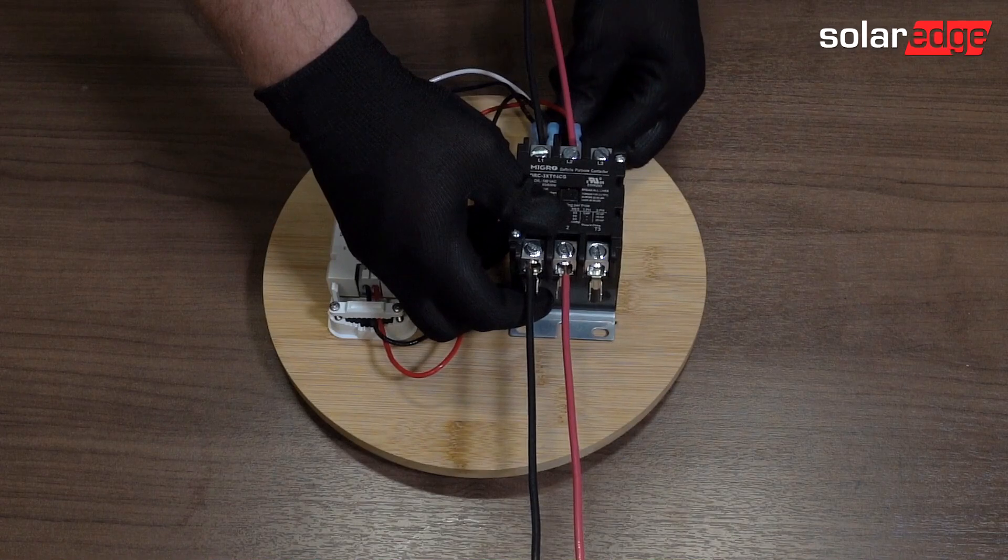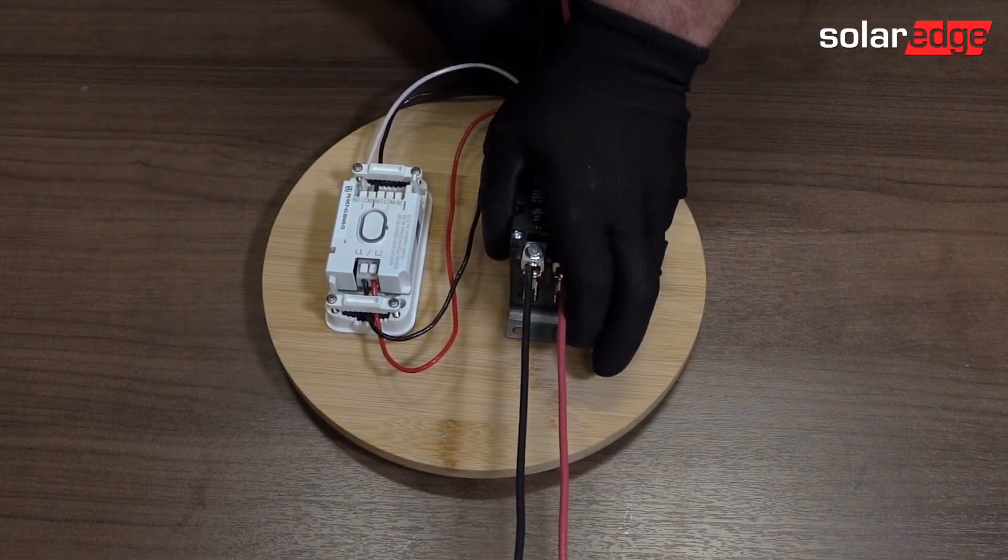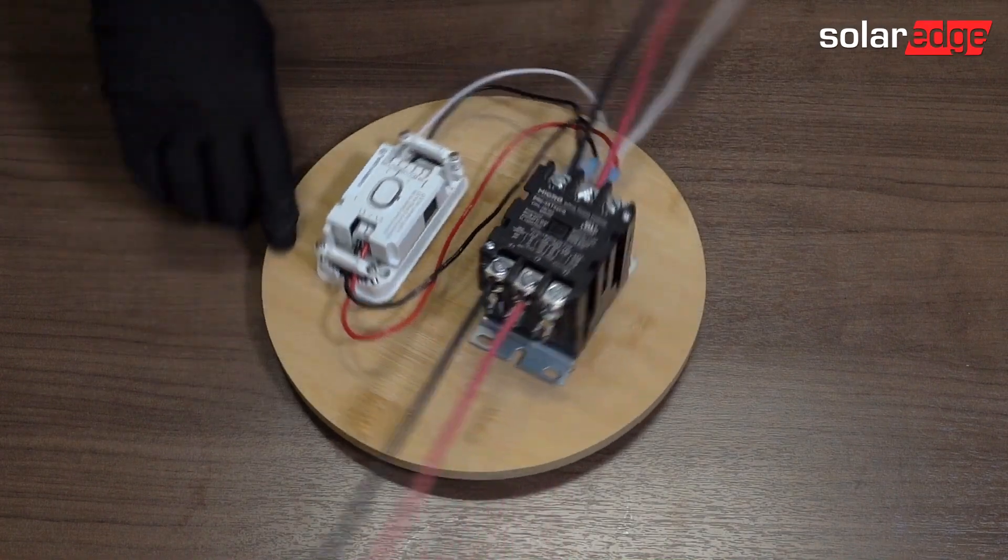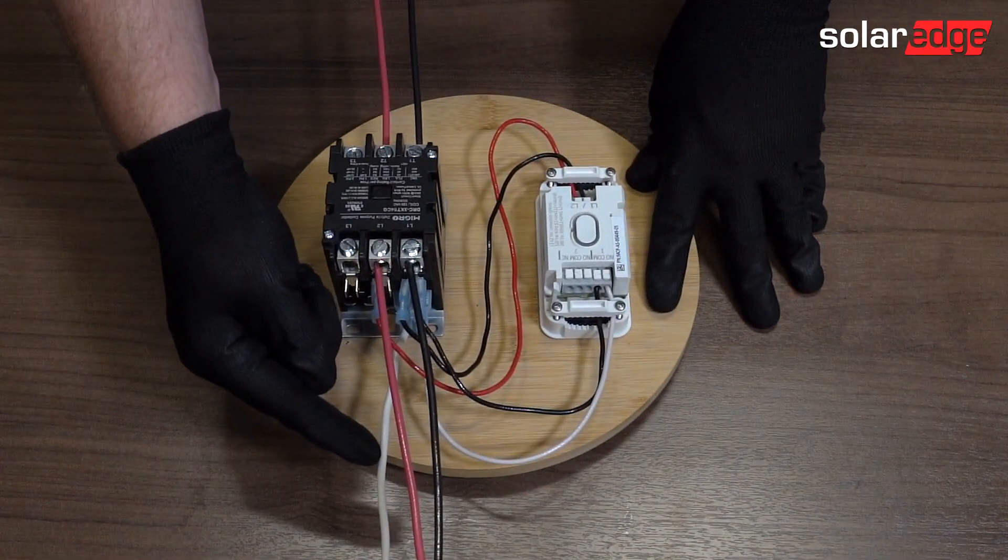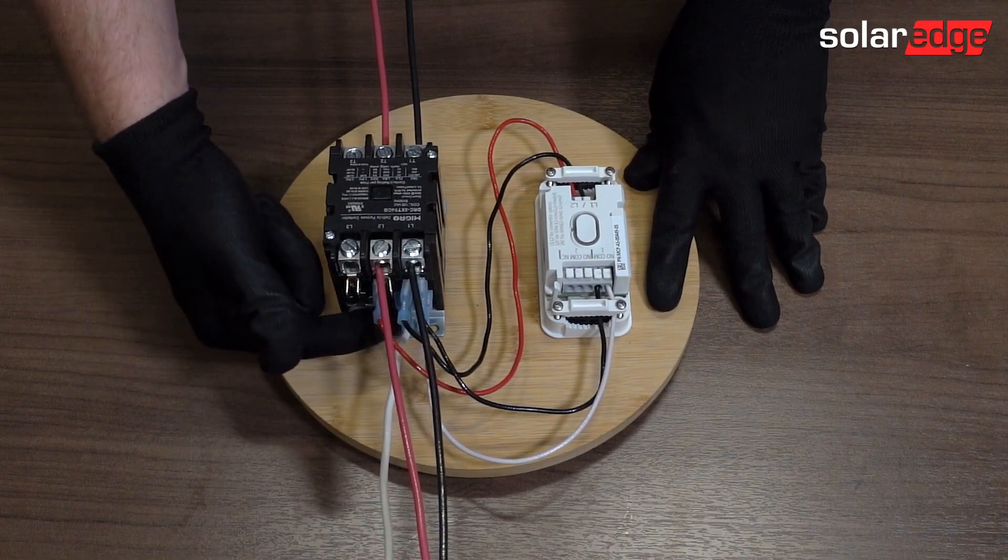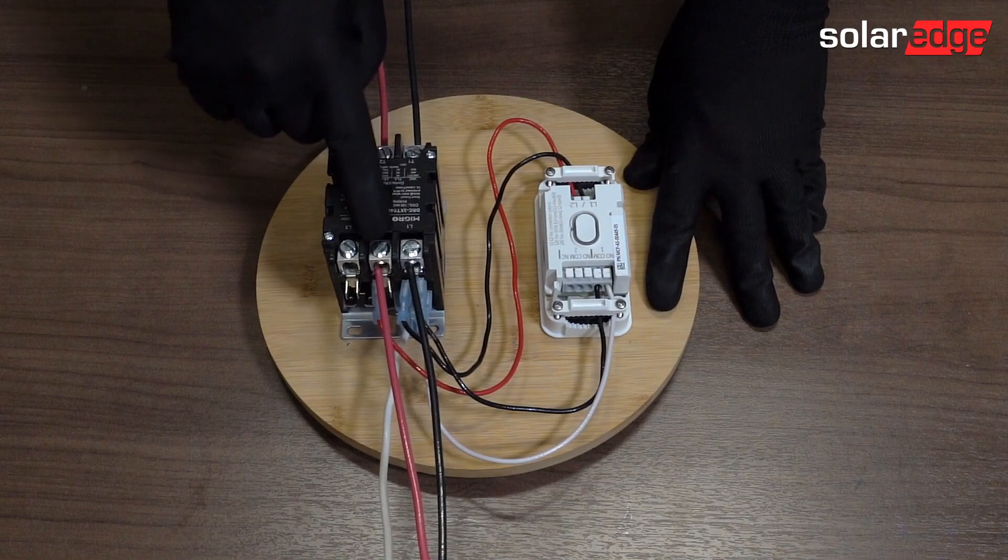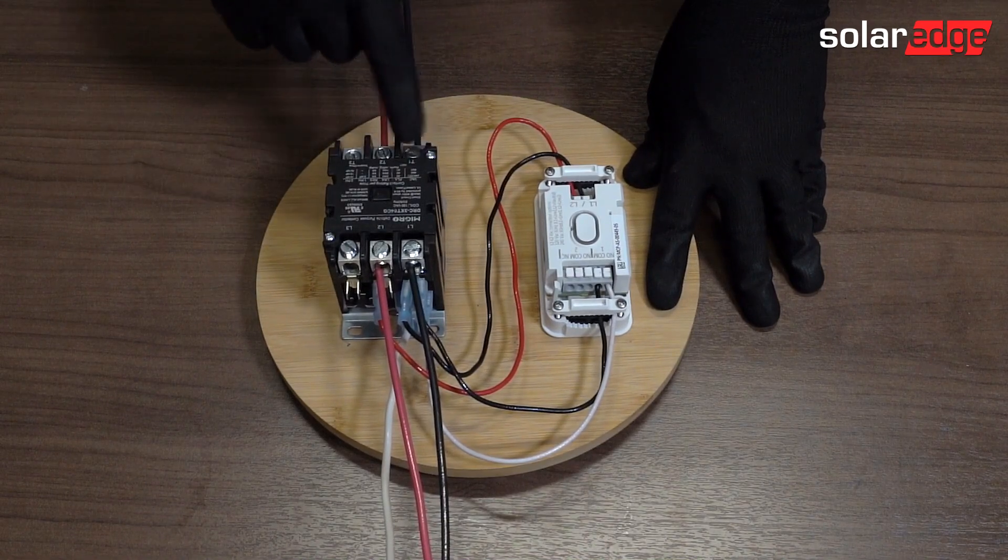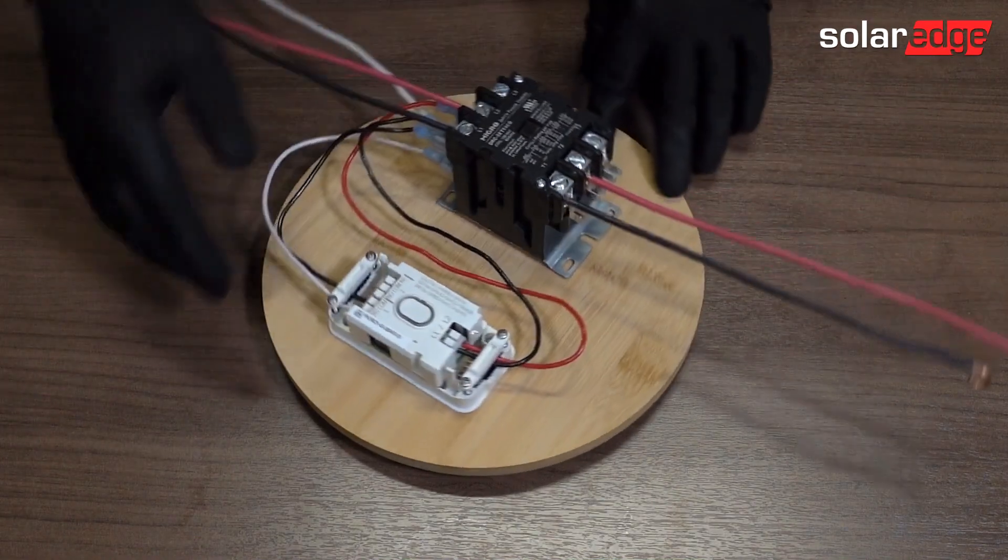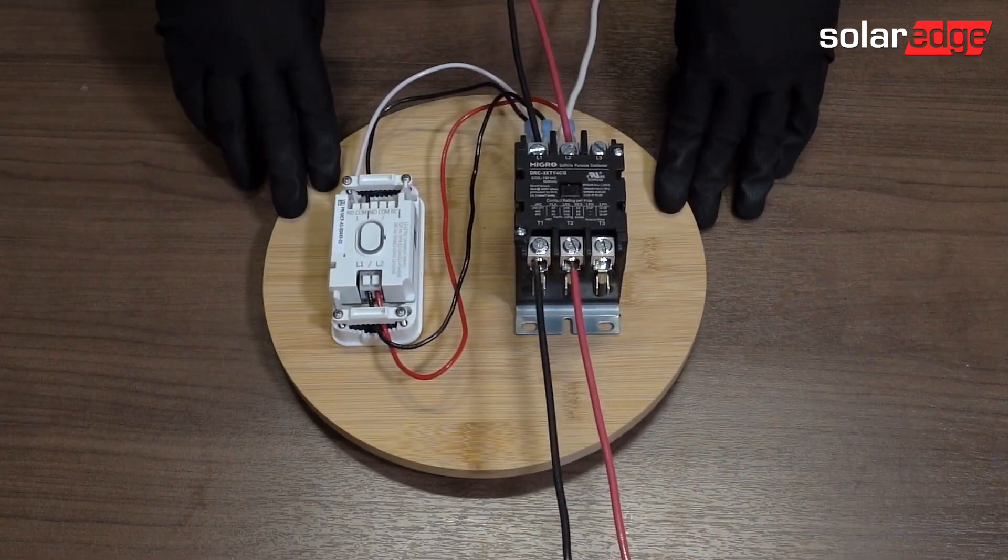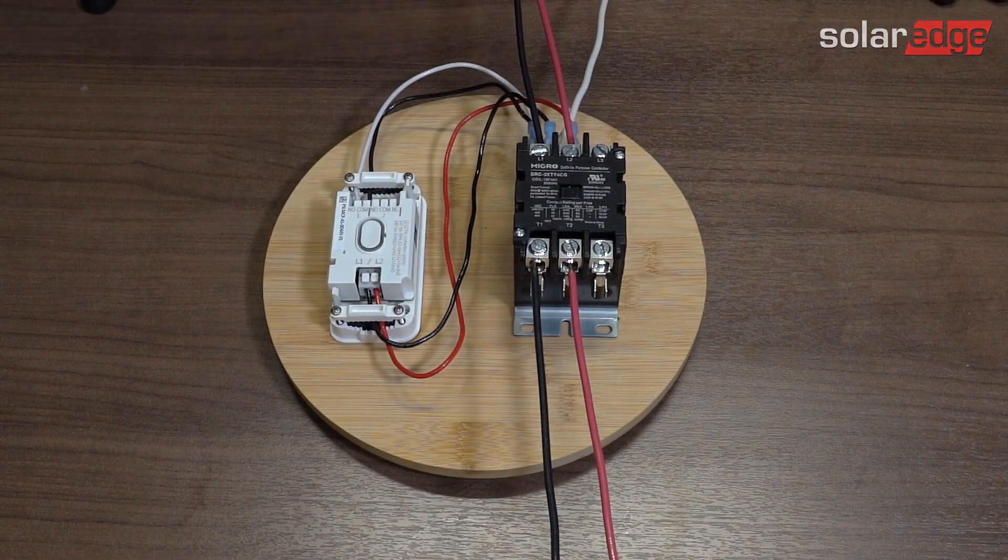And then the last thing, because this is a 120 volt coil, we're going to go from the neutral to the coil on the bottom here. We have our power supply done on line one and line two. And then this goes to our load on line one and line two. And that is how you wire a three-pole contactor to a SolarEdge load controller.